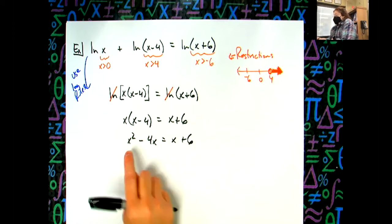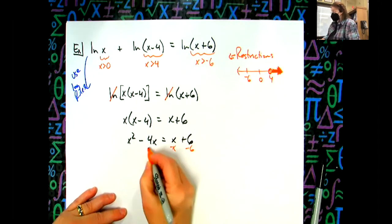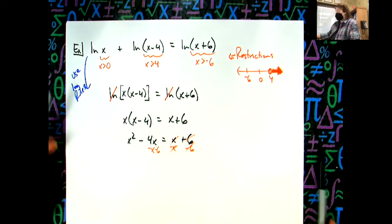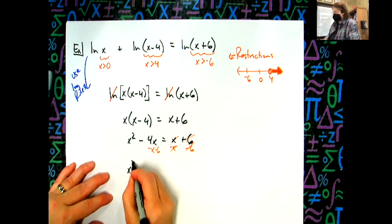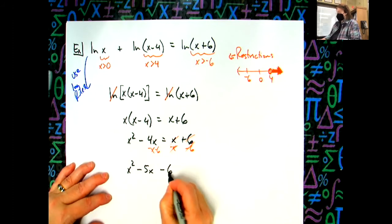I want that leading coefficient in front of that x squared to be positive, so that means I'm going to move everything over to the left. I'm going to minus the x and minus the six on both sides. So in a little bit more steps there, x squared minus five x minus six.